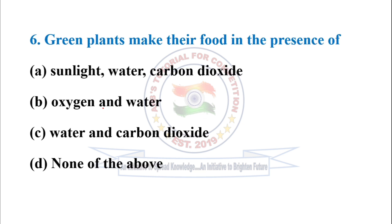Question number six: green plants make their food in the presence of? It is option A — presence of sunlight, water, and carbon dioxide. They produce oxygen during photosynthesis. So option A is correct.